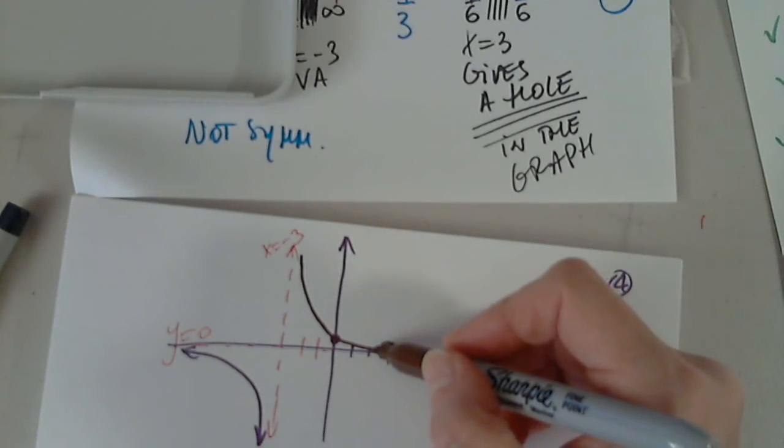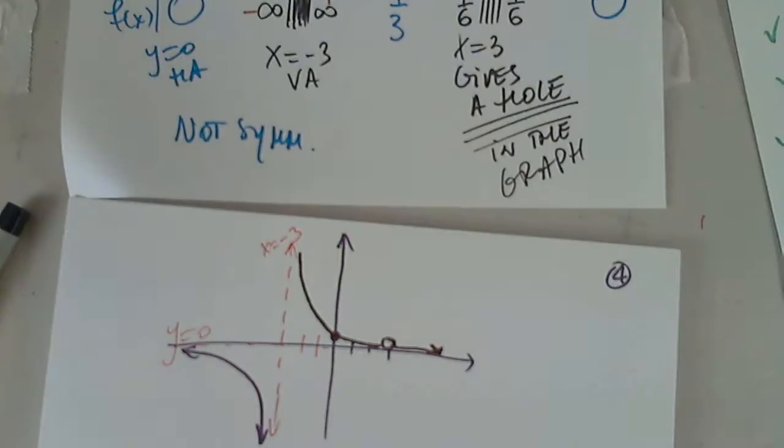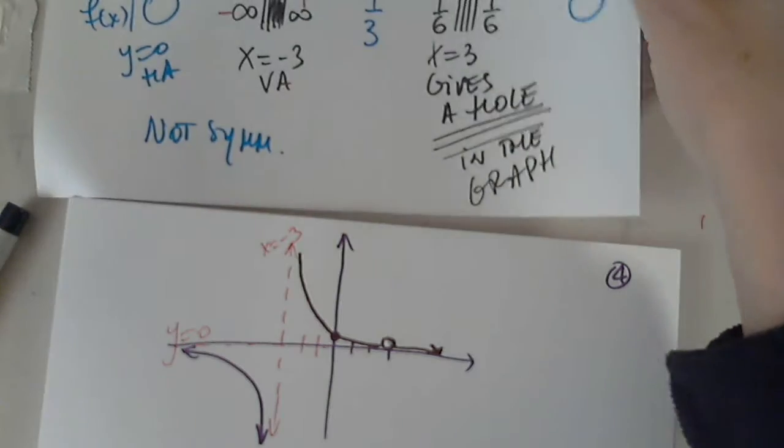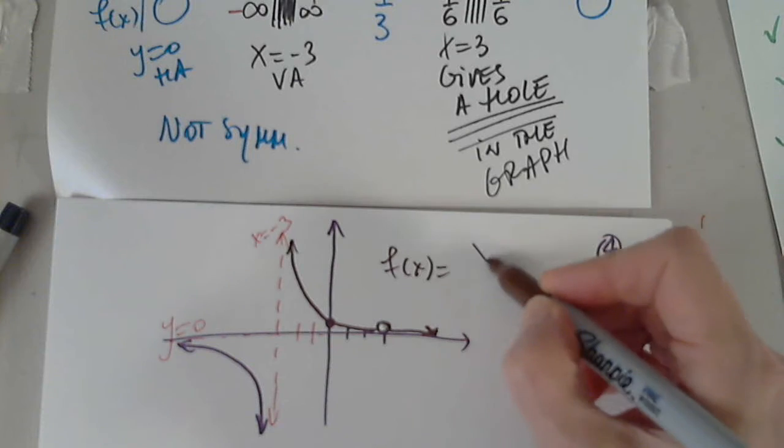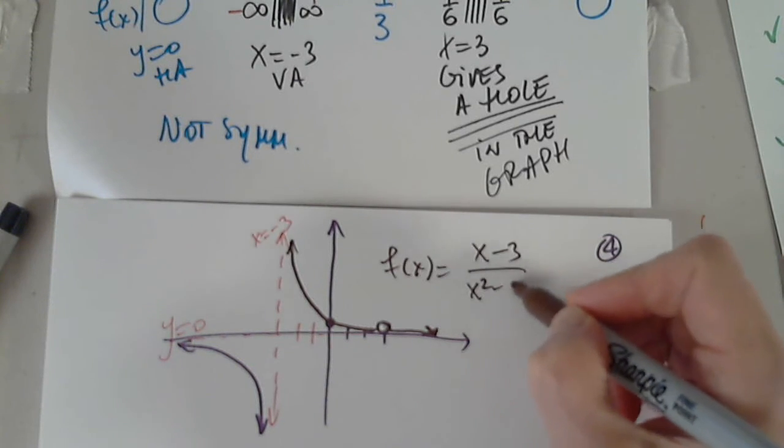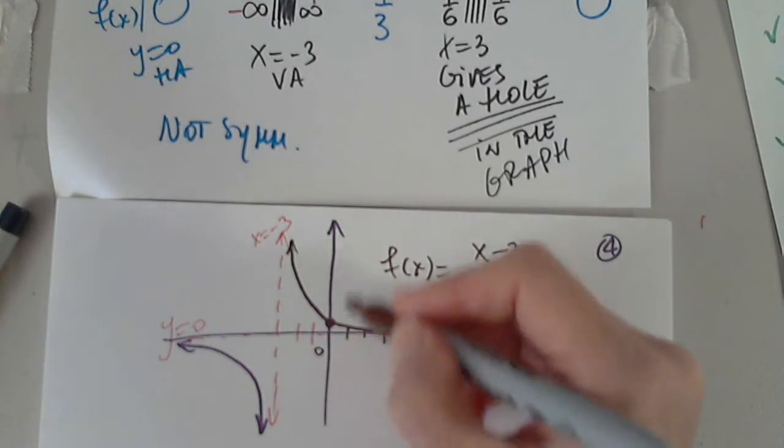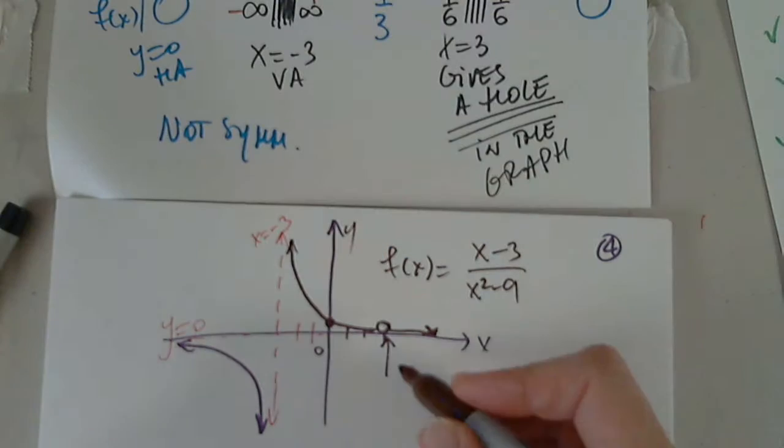So here's the graph. Not touching the horizontal asymptote. Mine kind of looks like it is touching. Not good. Shouldn't be touching. So this is f of x, x minus 3, x squared minus 9.